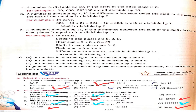Now, point 8 — a number is divisible by 7. To check: take the digit in the ones place, multiply it by 2, and subtract the result from the remaining number. If that difference is divisible by 7, then the original number is also divisible by 7.